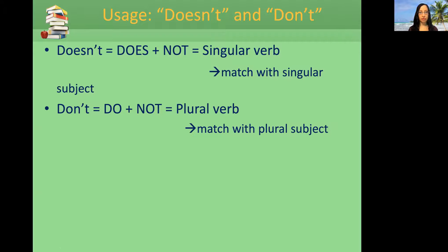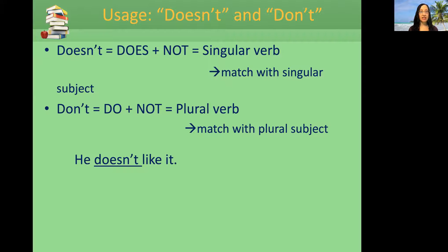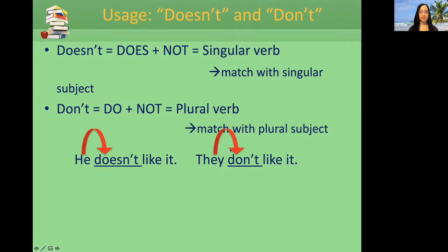Doesn't and don't. 'Doesn't' is a contraction — it equals 'does not.' It's a singular verb, so it matches with a singular subject. 'Don't' equals 'do not' — it becomes a plural verb and matches with a plural subject. For example: 'he doesn't like it' — remember, that's 'he does not like it.' 'They don't like it' — 'they do not like it.' If you don't like the contraction, just break it apart. The more you repeat it, the more natural it will sound.